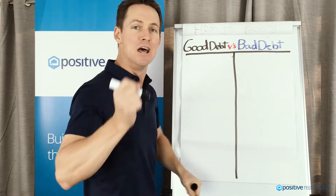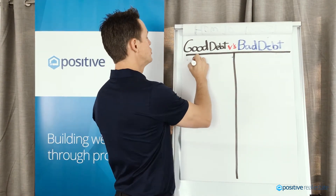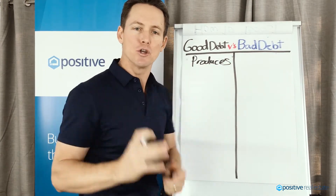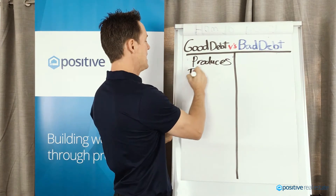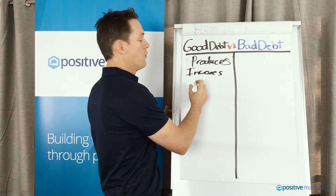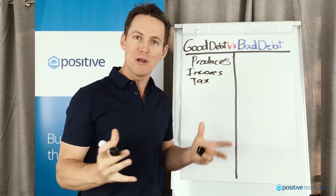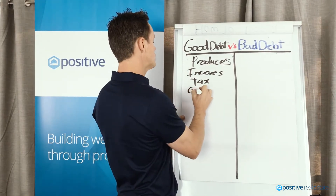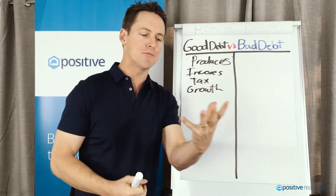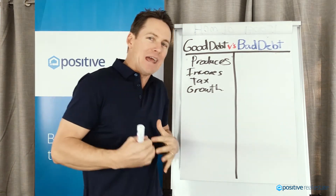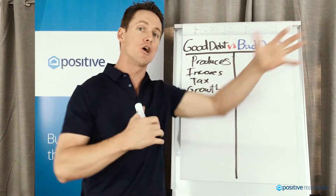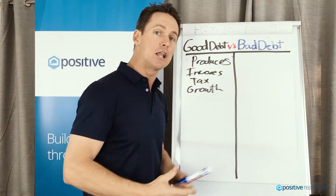Let's have a little definition of good debt versus bad debt. Good debt produces something. For me as a property investor, and for you as a property investor, it produces an income. We purchase an asset that produces an income. We get some tax deductions from that property that we own. And over time, we're going to get some growth. So good debt produces something that adds value to our life, our income, our asset base, and adds value to our medium to long-term future.